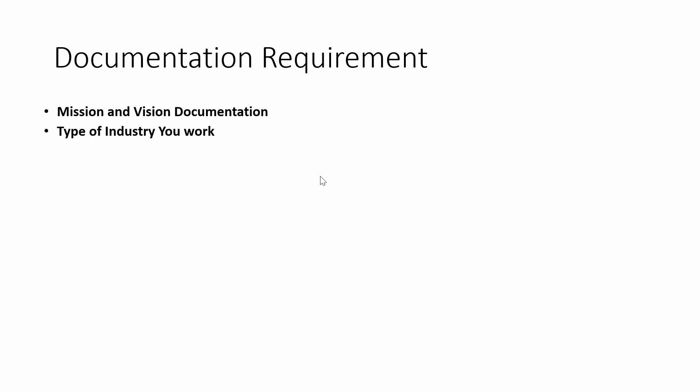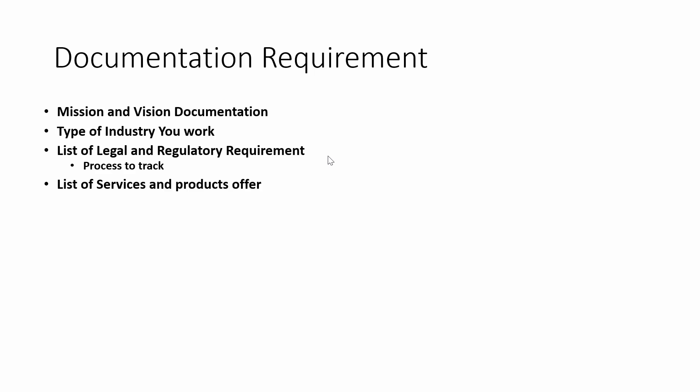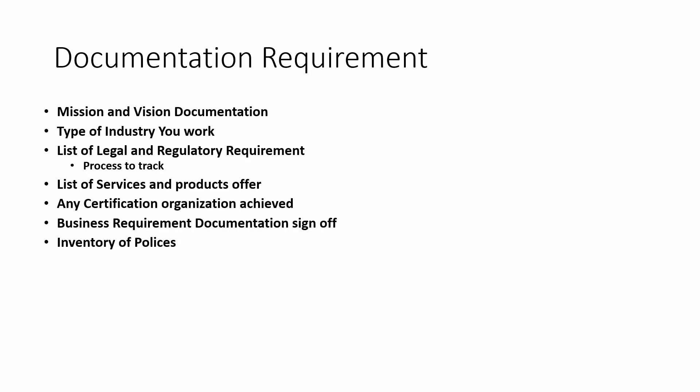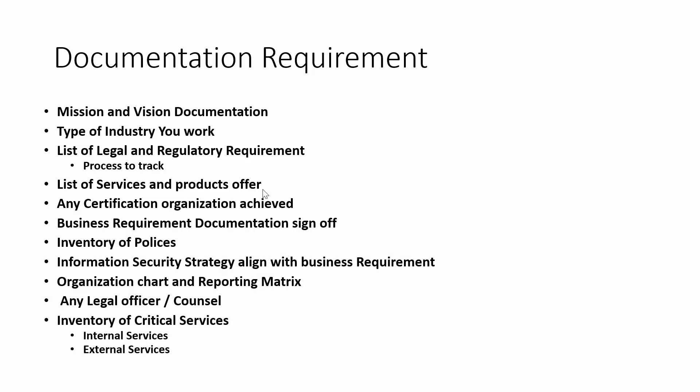The documentation required to meet governance organization context includes: mission and vision, the type of industry you work in, a list of legal and regulatory requirements and processes to track them, list of services and products offered, list of suppliers, any certification requirements, business requirement sign-offs, inventory of policies, an updated information security strategy, organization reporting matrix, legal officers inventory, and a list of internal and external services and suppliers.